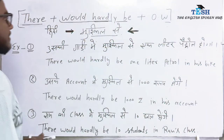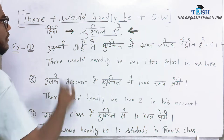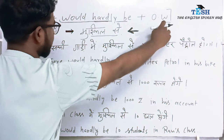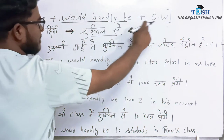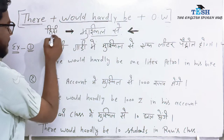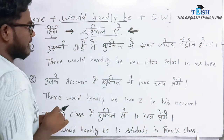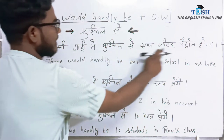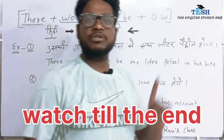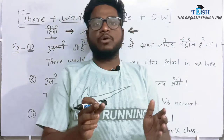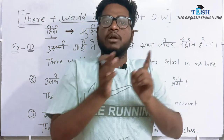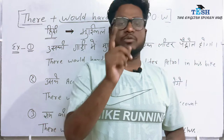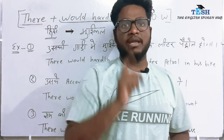The structure I'm talking about is: 'There would hardly be + [other word].' This is the way to express the Hindi word 'muskil se' (मुश्किल से, meaning 'barely/hardly'). For example, if you want to say 'us ki gaadi mein muskil se ek liter petrol hoga' (there is barely one liter of petrol in his bike), you can easily frame it using this structure — 'There would hardly be.'